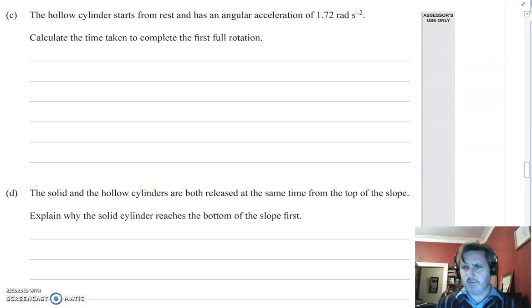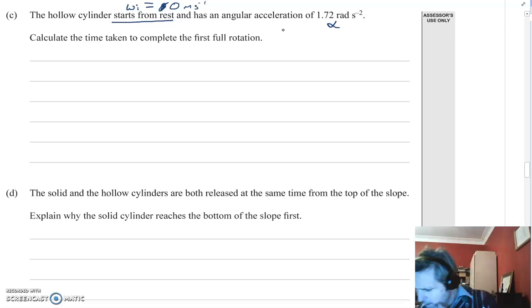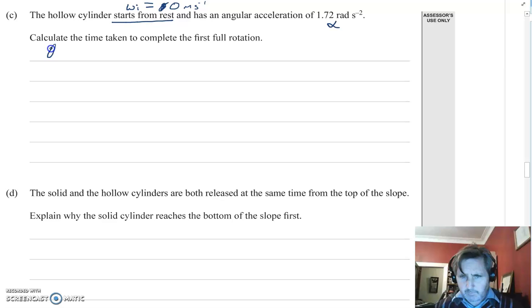Let's look at the next question. The hollow cylinder starts from rest and has an angular acceleration of 1.72 radians per second squared. Calculate the time taken for first full rotation. Just like year 12, starts from rest means that it is not rotating at the start, so omega initial is going to equal 0 meters per second. We want to calculate the time. The equation I'm going to choose is theta equals omega initial times t plus half alpha t squared.